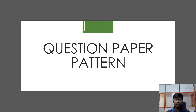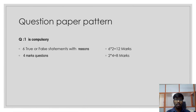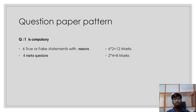Let's get into the topic — question paper pattern. In your CA Foundation Paper 1, you have a total of 6 questions. Question number 1 is compulsory. It is divided into 6 true or false statements and 4 more questions, which are all compulsory. You don't have any choice for this question. If you skip question number 1, you will be losing 20 marks, and you'll be writing for only the balance 80 marks. So question number 1 is very, very compulsory.